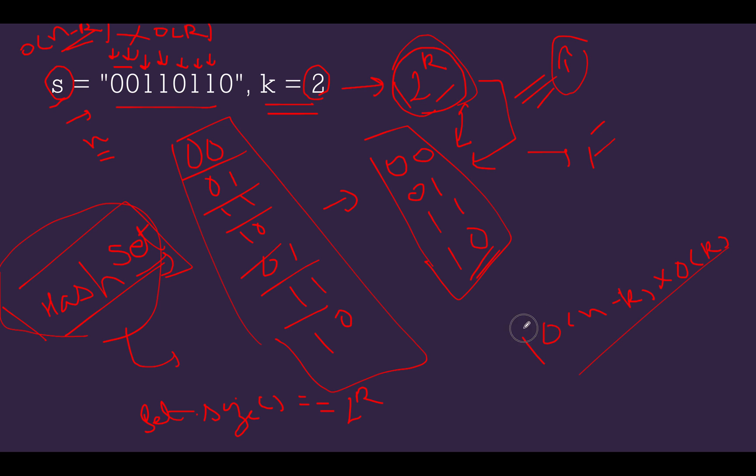And what will be the space complexity, the worst case space complexity? The solution would be order of 2 raise to power k because we are generating, there could be a case where there is an exact match and we will have to store all of these in our hash set. So space is slightly compromised, but the time complexity has reduced drastically.